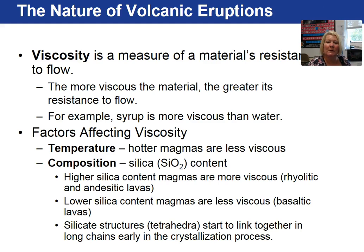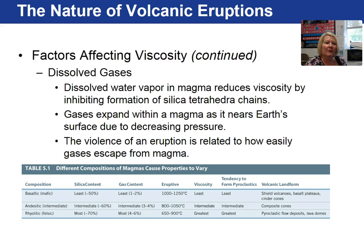Viscosity, the term I used on the previous page, is defined as a measure of a material's resistance to flow. For example, hot syrup would be non-viscous compared to cold syrup, and the more viscous the material, the greater its resistance to flow. The factors affecting viscosity include temperature — hotter magmas tend to be less viscous — as well as composition. Higher silica contents create a more viscous lava. Another factor affecting viscosity includes the amount of dissolved gases. Water vapor is the primary dissolved gas in magma, and it reduces the viscosity.